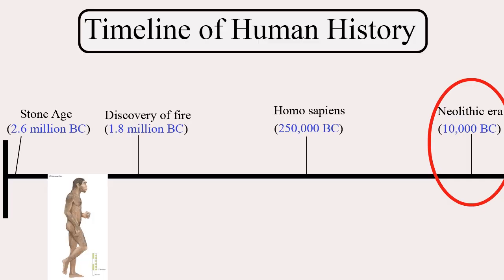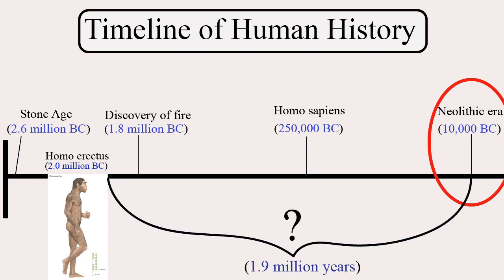But wait a second, Homo erectus was walking on two feet roughly 2 million years ago. Why did it take nearly 1.9 million years for the concept of a dirt path to happen?